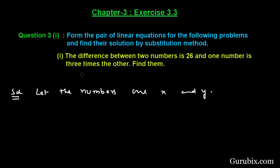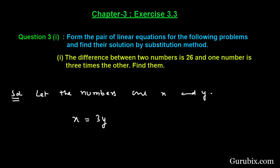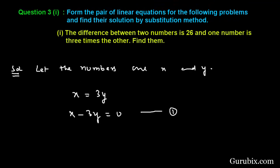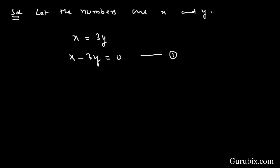In the first condition it is given that one number is three times the other. Suppose x is three times y, so this means x minus 3y equals zero. This is our equation number one. The difference between these numbers equals 26. Clearly x is greater than y, then x minus y equals 26. This is our equation number two.